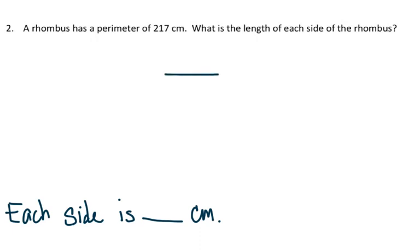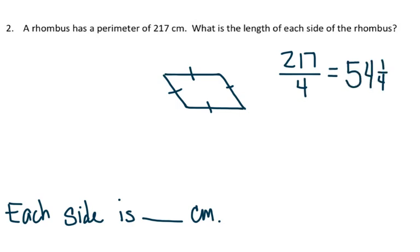We know that in a rhombus, each one of these sides is the same. The perimeter is adding all of them together, so each one of the sides is the same length. Adding them together gives me 217, so I'm taking 217 and dividing it by four. Each one of the sides would be 54 and one-fourth centimeters.